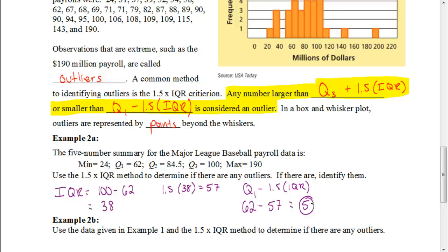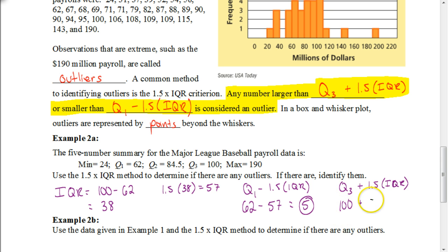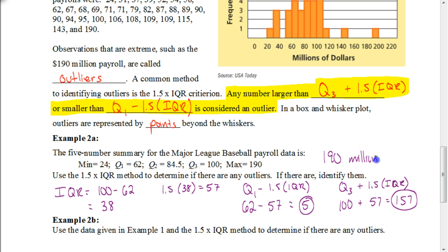Now let's check the upper end. We take Q3 plus 1.5 times the IQR: 100 plus 57 gives us 157. Anything larger than 157 would be an outlier. Looking at our data, our largest number is 190 million dollars, and we don't have any other values beyond 157, so 190 is identified as an outlier.